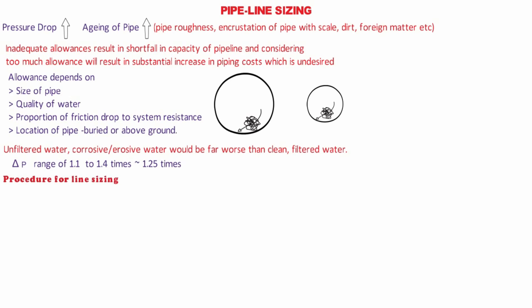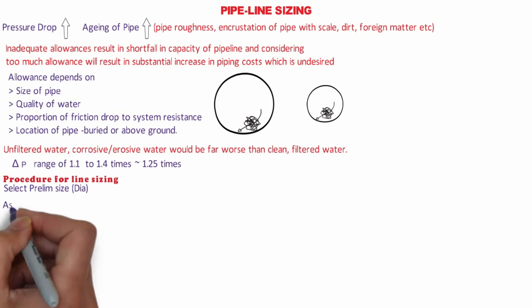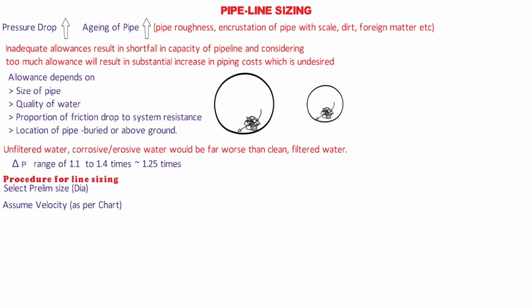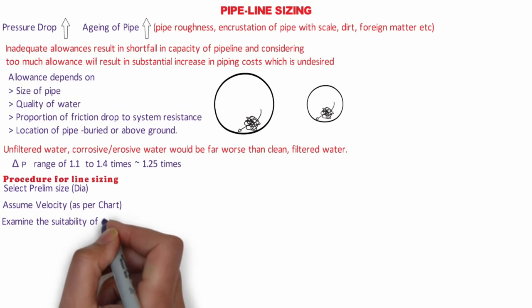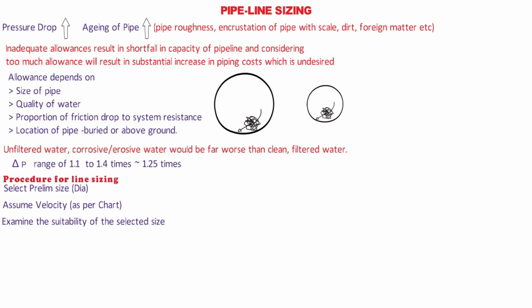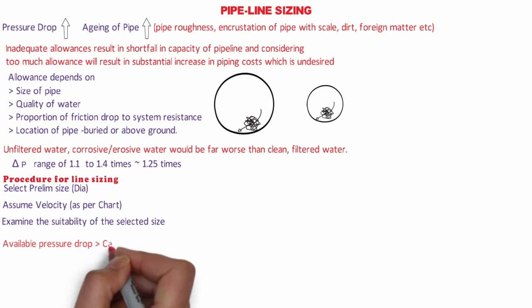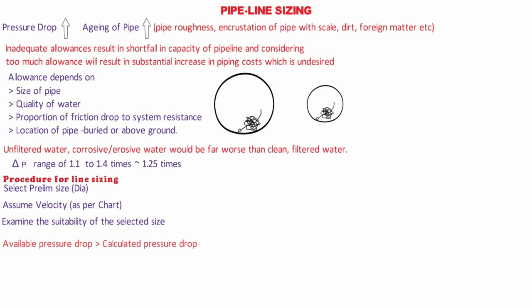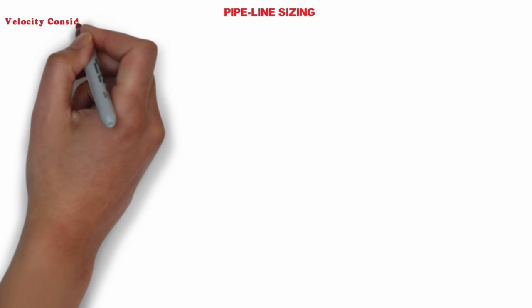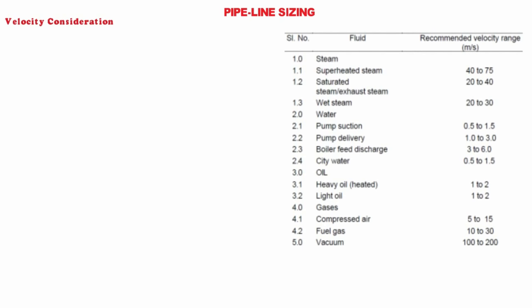The procedure for line sizing is to first select a preliminary size — i.e., diameter — based on assumed velocity as per the chart shown, and then examine the suitability of the selected size from the point of view of the various system requirements discussed earlier. Mainly, the available pressure drop should be more than the calculated pressure drop for a particular pipe straight length and pipe schedule. You can refer to our video on pipe thickness and schedule for details. The smallest pipe size which meets all system requirements is the optimum size for the intended service. We need velocity as our first input for this procedure.